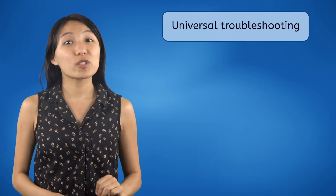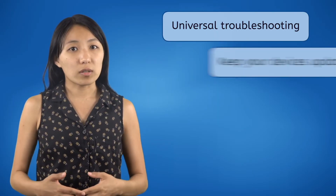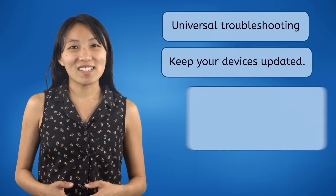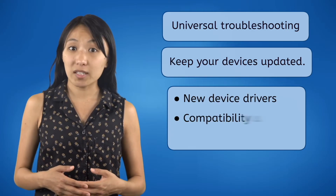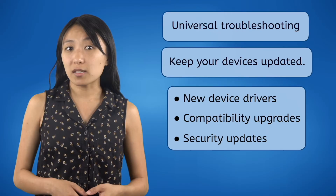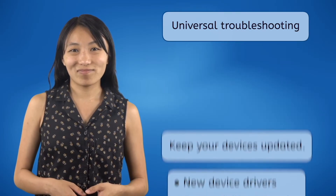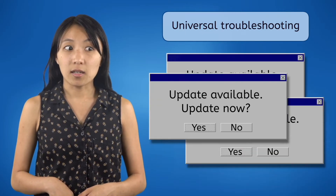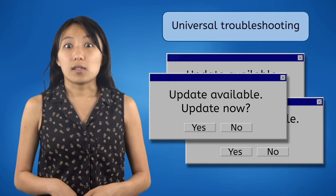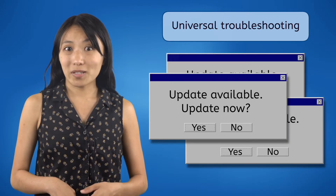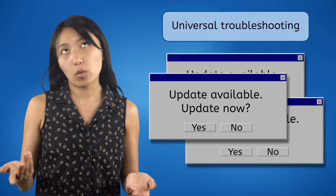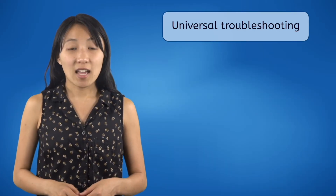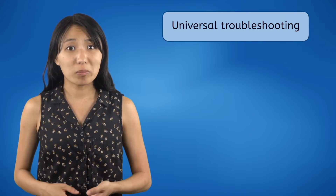The third universal method for troubleshooting is a simple but important one: keep your devices updated. Operating system updates often include things like new or updated device drivers, compatibility upgrades for devices and programs, and security updates to keep viruses out of your system. Luckily, most operating systems will let you know when there's a new update — again and again. Sometimes the notifications can get annoying, but all you have to do to make it go away, for a while at least, is click YES and let your computer update. As a bonus, a lot of updates require you to reboot your computer too.